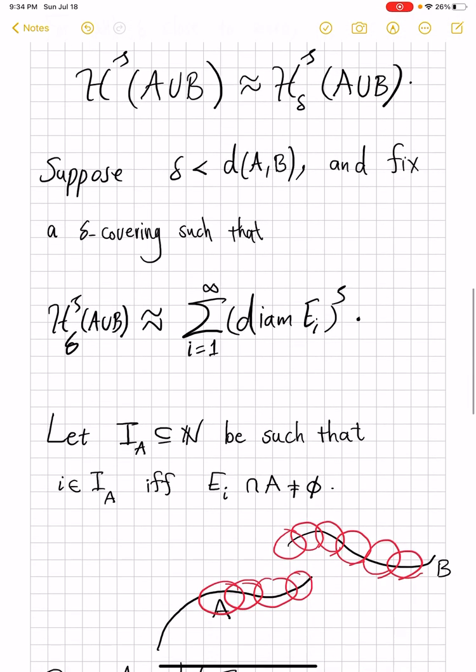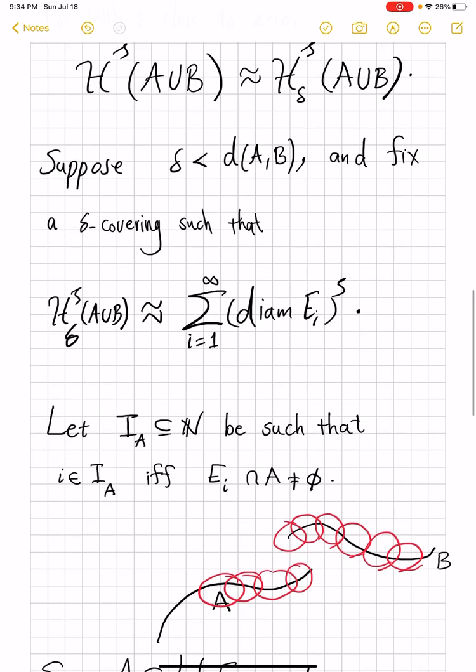Now comes the property of δ being less than the distance of A and B. We have a covering of the union of A and B. So we have a bunch of sets, a countable bunch of sets E_i, which cover the whole of A union B.